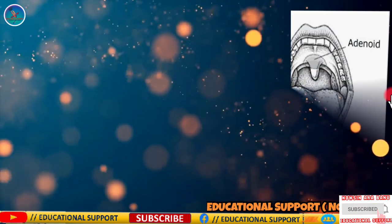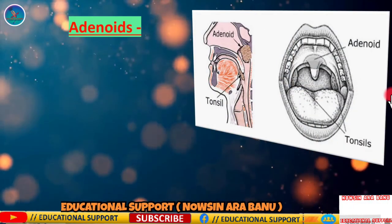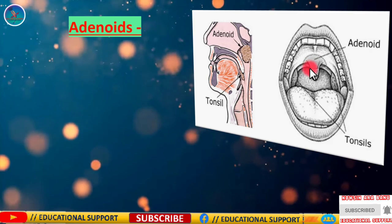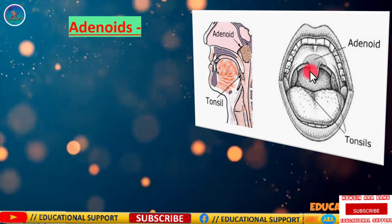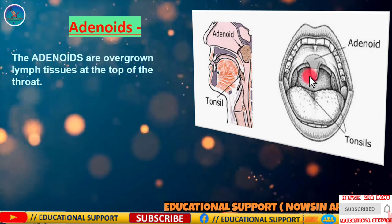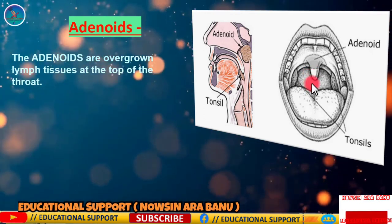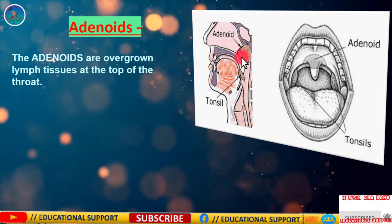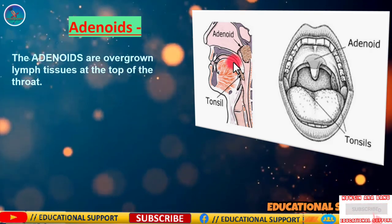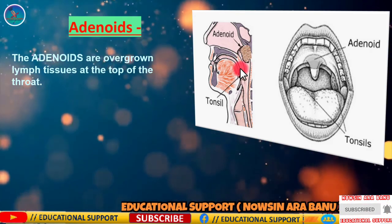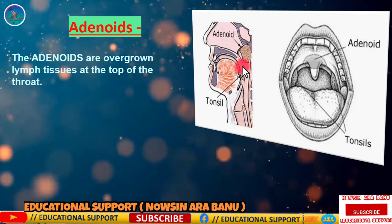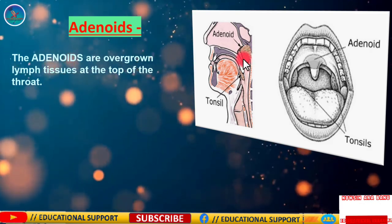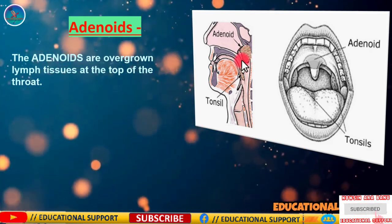When adenoids interfere with breathing, they are sometimes removed. The lymph system consists of nodes of cells and connecting vessels that carry fluid throughout the body. This system helps the body resist infection by filtering out foreign matter and germs, and by producing lymphocyte cells to fight them.